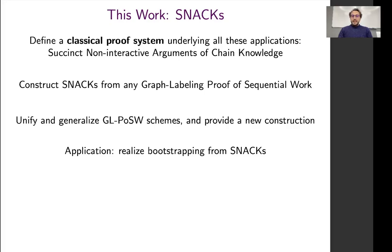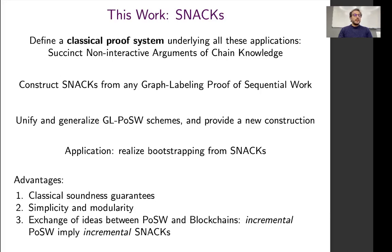In this work, we define a classical proof system that underlies bootstrapping and other light-client protocols. We construct Snacks from graph-labeling proof-of-sequential work schemes. In the paper, we unify and generalize these schemes and provide a new one. We show how to use these Snacks to generically solve the bootstrapping problem. The key advantage of our work is that it provides classical soundness guarantees — measurable guarantees for a verifier that reads a malicious proof. The work is simple, generic, and modular, and allows for an exchange of ideas between the theory of proof-of-sequential work schemes and light-client blockchain applications.